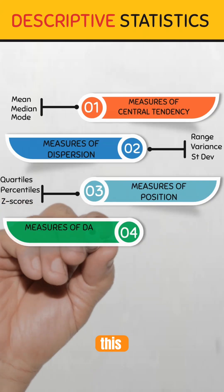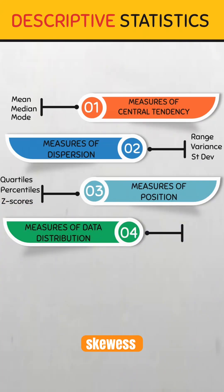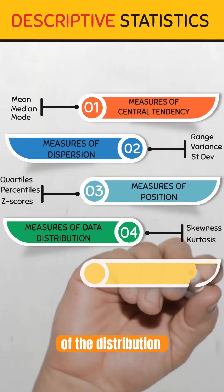Data distribution. This describes the shape and characteristics of a data set. Skewness shows the symmetry of the data, and kurtosis shows the peakedness or flatness of the distribution.